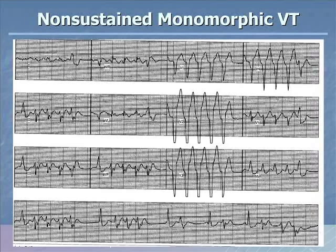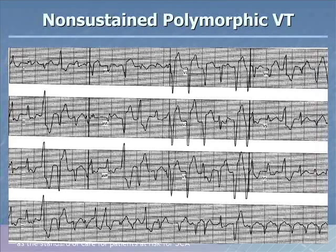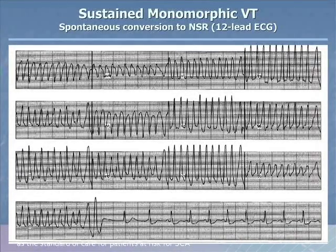Here's a person with non-sustained monomorphic ventricular tachycardia — they have normal beats interspersed with runs of ventricular tachycardia that all look the same. On that bottom rhythm strip you can see normal beats followed by three beats of non-sustained ventricular tachycardia where each beat looks the same. Compare that with a person who has frequent premature ventricular contractions interspersed with normal beats, but the PVCs look different. Here's a person with sustained monomorphic ventricular tachycardia on a 12-lead, which breaks spontaneously to sinus rhythm.